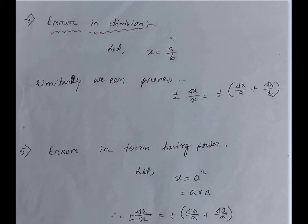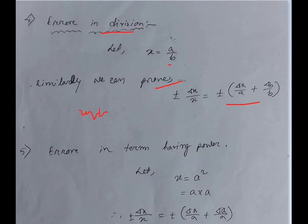Similarly, for error in division — suppose x equals a divided by b — we can simplify and prove that del x by x equals plus-minus del a by a plus del b by b. So the error formula for multiplication and division is the same, just like addition and subtraction had the same error formula.